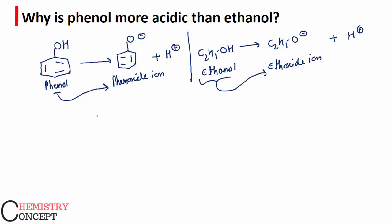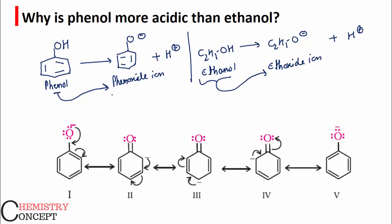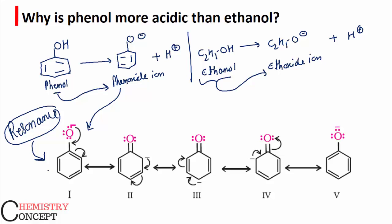The phenoxide ion is stabilized because of resonance. You can see here are the resonating structures given — there are five resonating structures which make the phenoxide ion extra stable. Because the phenoxide ion is stable, phenol has a greater tendency to release the proton and convert into phenoxide ion.